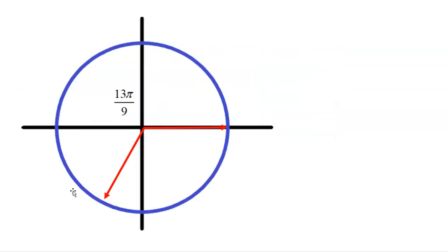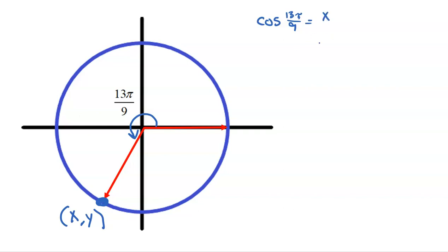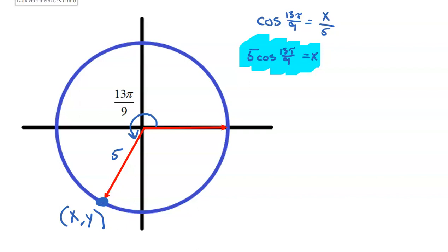Let's look at some examples. We have an angle of 13π/9, ending in quadrant 3, with an x and a y. Cosine of 13π/9 equals x divided by the radius. If the radius is 5, then x equals 5 times cosine of 13π/9. For an approximate answer, use your calculator — and since the angle is in radians, make sure your calculator is set to radian mode.